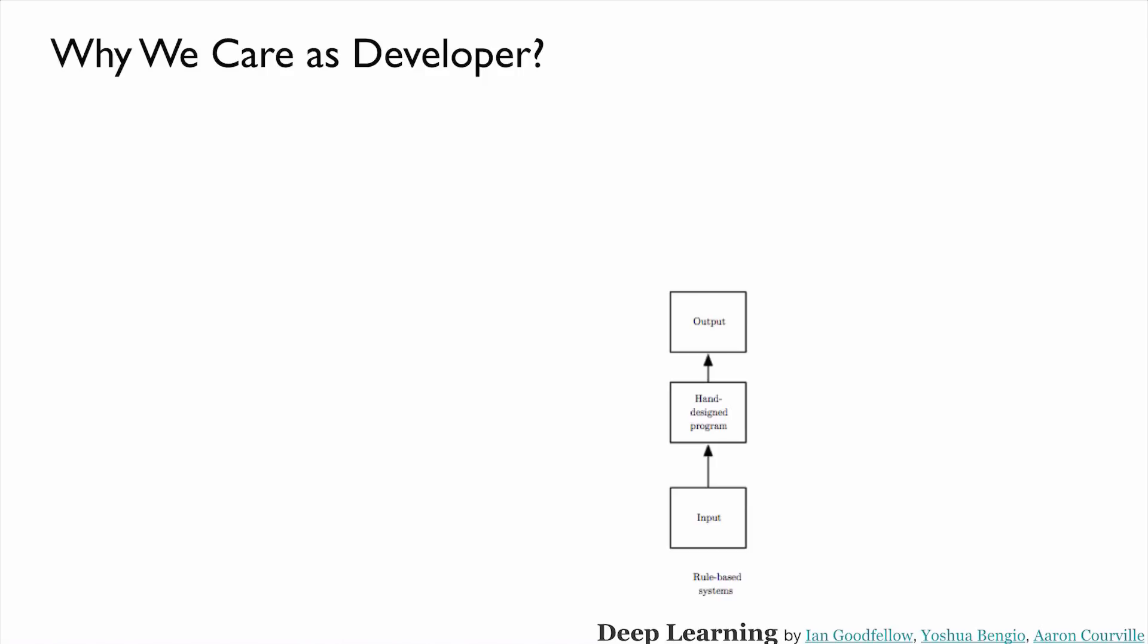Why we care as a developer? In fact, we can write software without even knowing deep learning or using deep learning. This one is usually called rule-based systems. We can imagine all possible inputs, and then based on the inputs, we design all rules manually. And then hopefully these rules can work with these inputs and then generate some useful output. Machine learning can change this one significantly. Instead of making all these rules manually, this machine learning can learn these rules automatically.